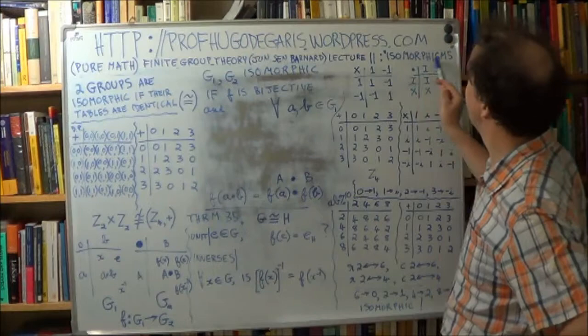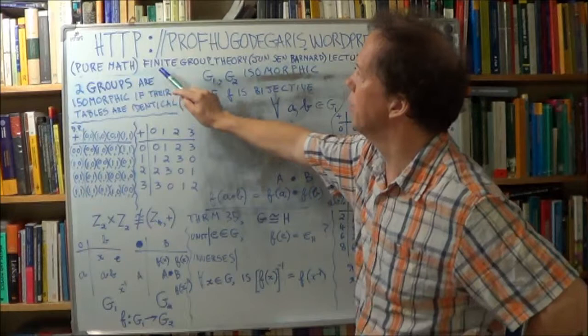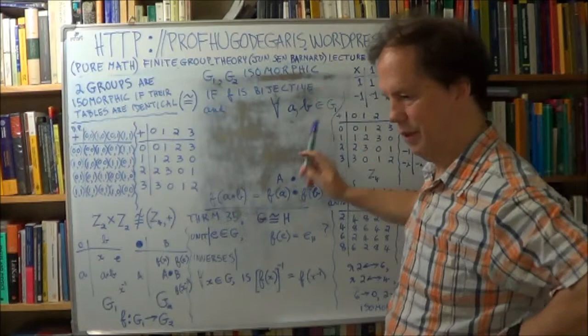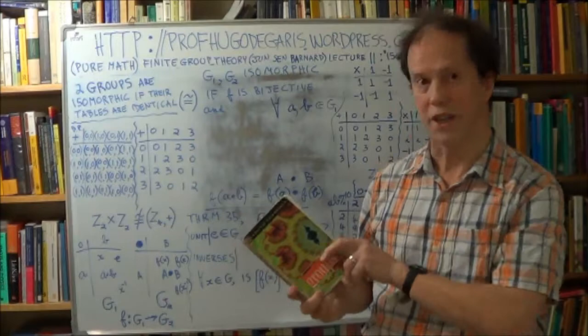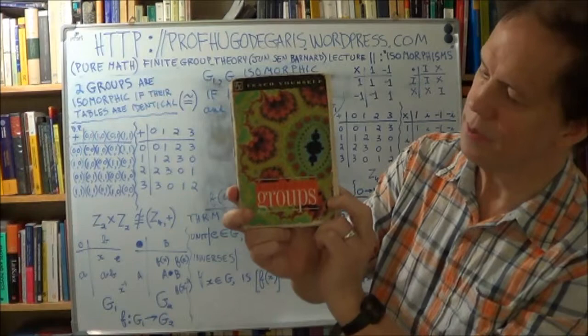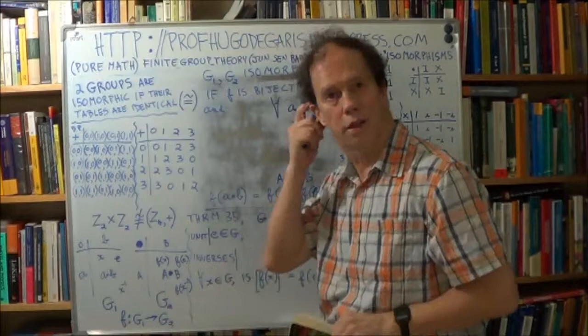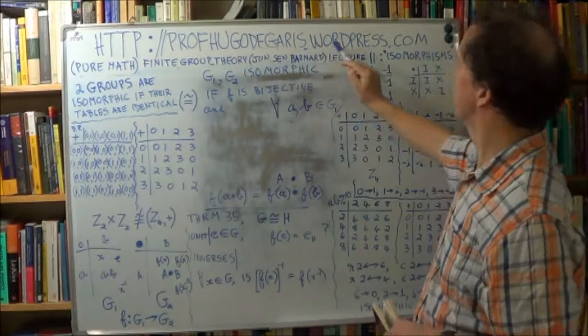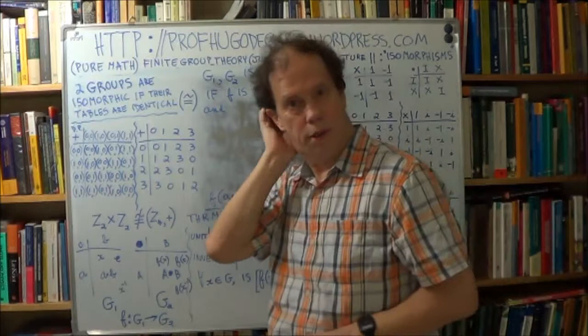This is lecture 11 on isomorphisms. It's part of a pure mathematics course on finite group theory at junior and senior level, although now it's more into the senior level. The first author is Barnard, and here's the text for this course, or lecture set as I call them. It's in the Teach Yourself series, and the title is Mathematical Groups. If you want to know more about the text, how you can get it, its price, you can get it for free on emule.com. Go to this website, profhugodegaris.wordpress.com.